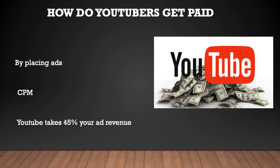So how do YouTubers get paid? They make money by monetizing their videos with ads running through them. The money you earn depends on your CPM. CPM stands for cost per thousand, and it is the amount an advertiser pays to have its ads served against videos 1,000 times. It is calculated based on how many people watch the video and from where they are watching.